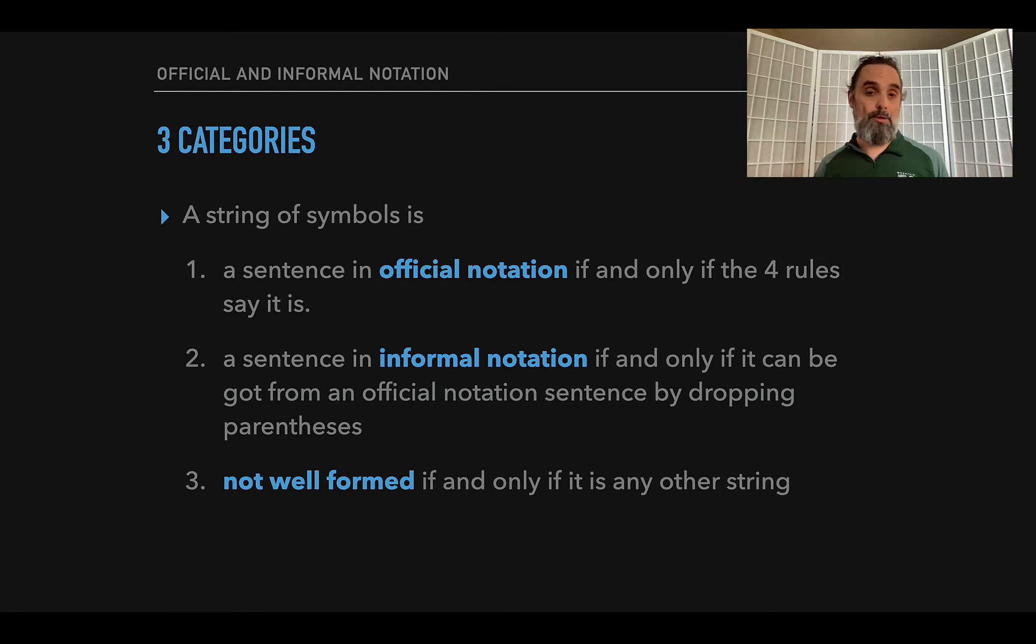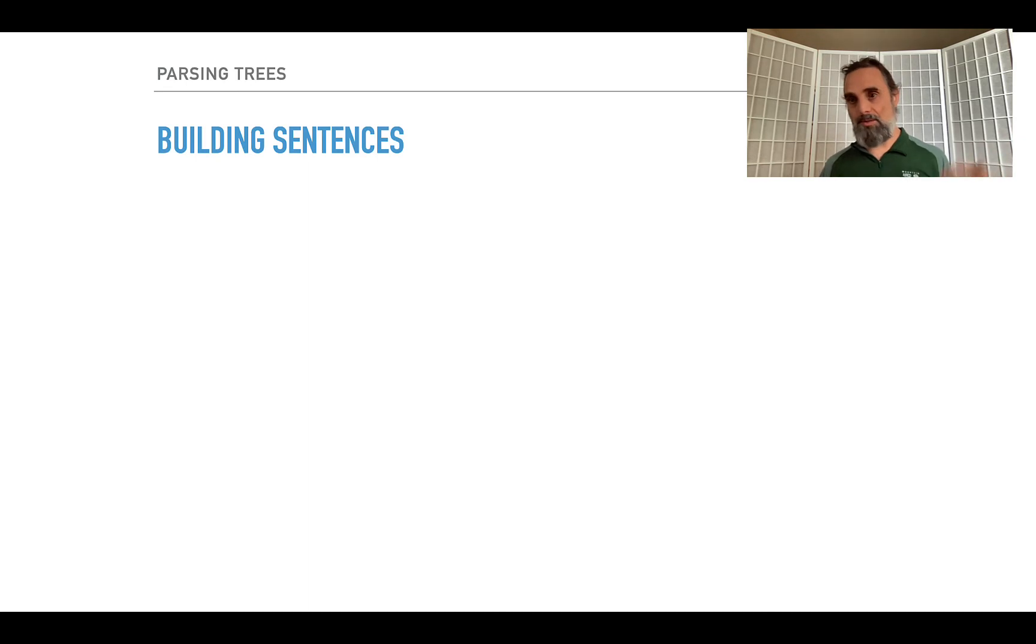So those are our three categories: official notation, informal notation, and not well formed. And those are the three. If we have some symbols in front of us, we can ask: is it a sentence in informal notation? Is it a sentence in official notation? Is it a sentence in informal notation? Or is it just not well formed at all? And we saw examples of all of those.